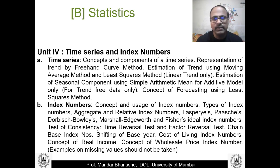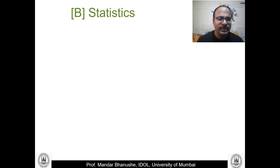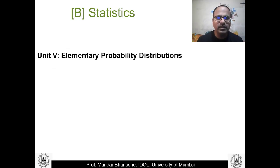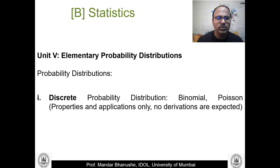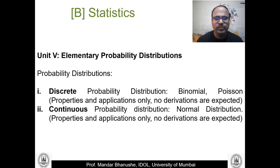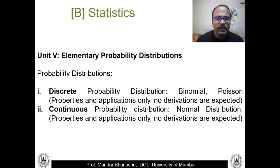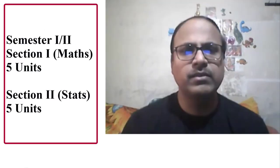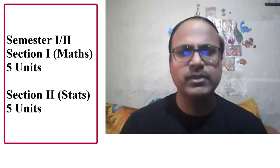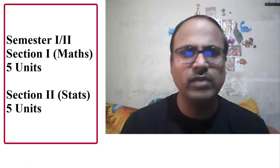The final unit in Semester 2 is Probability Distributions, where we talk about two types — discrete and continuous — with examples based on each. That completes both semesters: five units in Semester 1 and five units in Semester 2, giving ten units total, with a 2-to-3 distribution between Mathematics and Statistics sections.